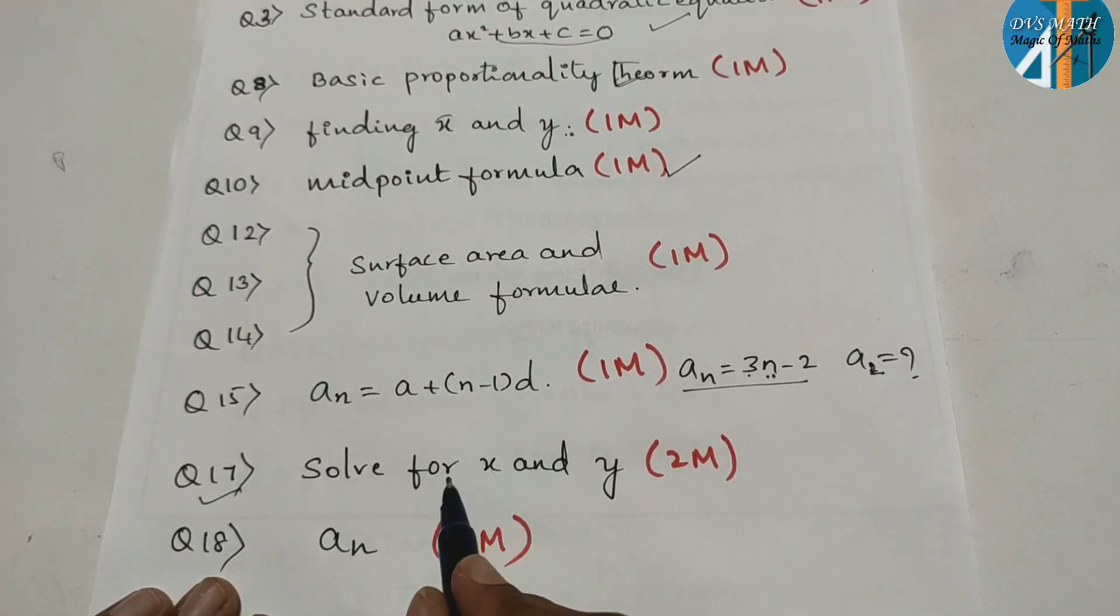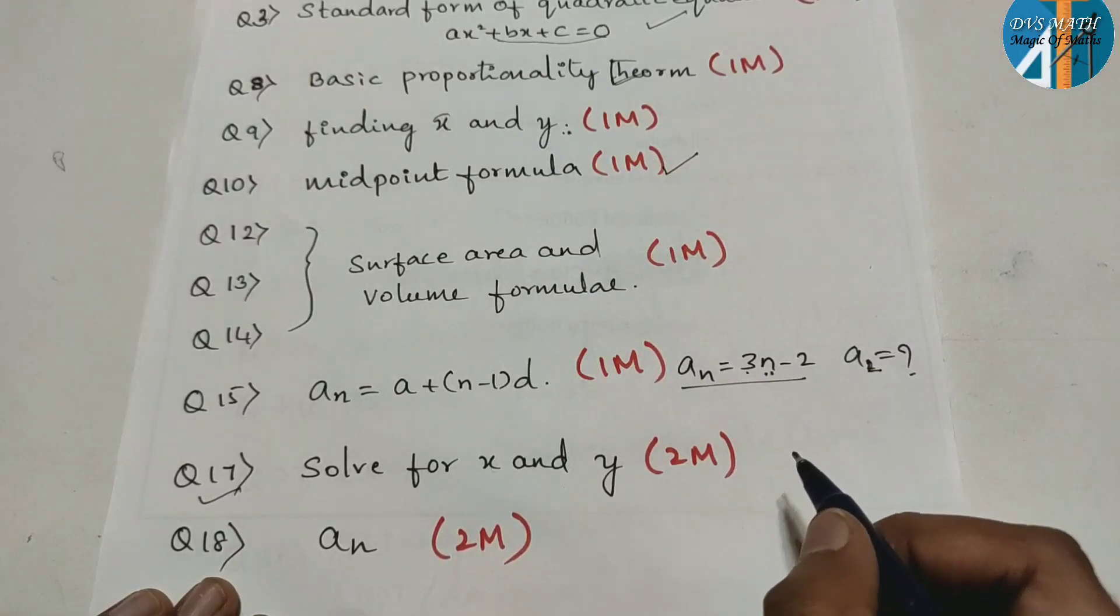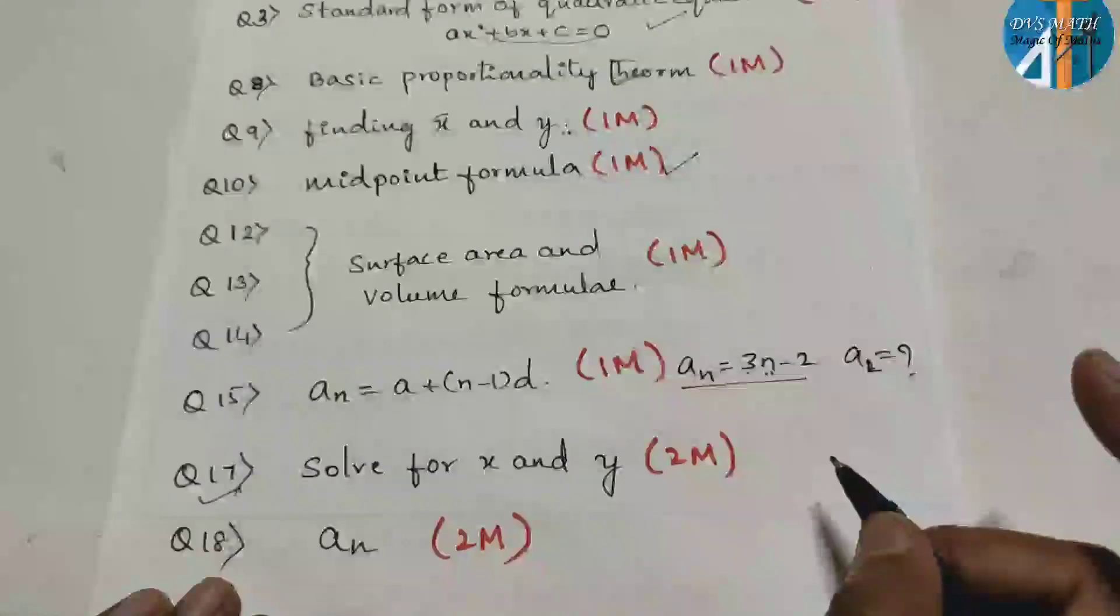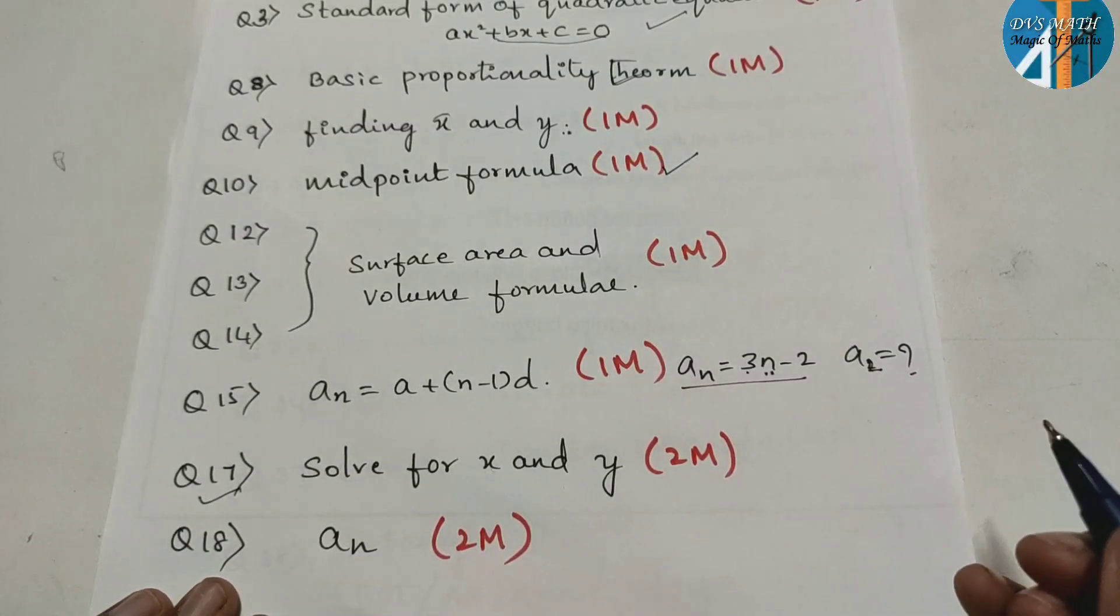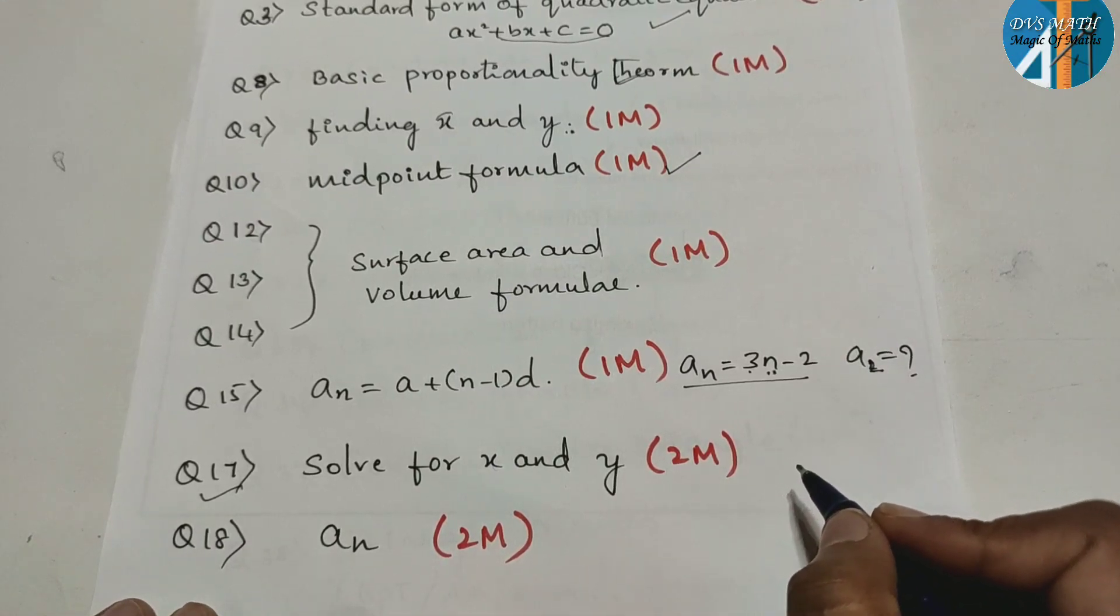Next, question number 17 is very important. Solve for x and y. This method is elimination method. In the last session, I have a supplementary students. It is important. If I have to write this in the last session, you will refer to it.